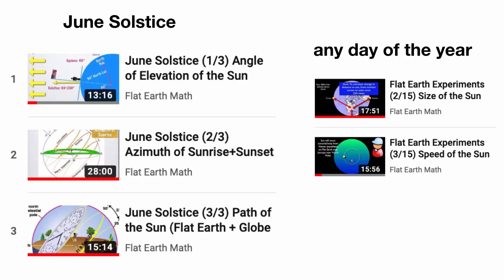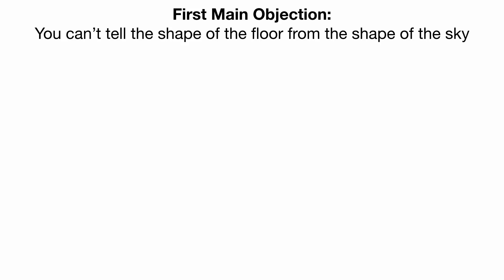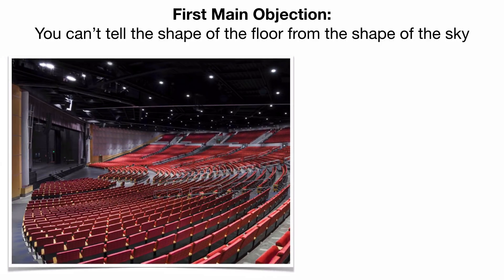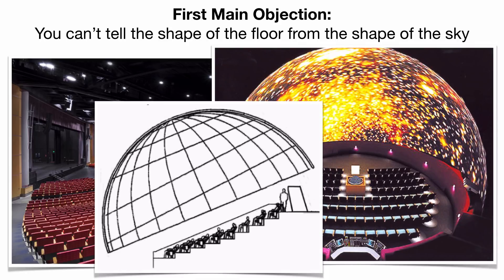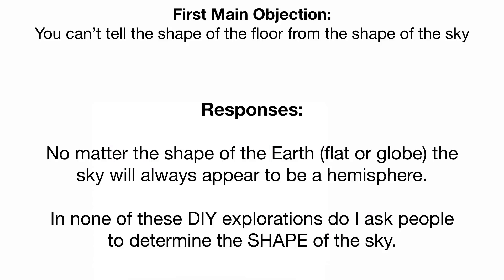The first main objection is that I'm focused on the Sun. People say you can't tell the shape of the floor from the shape of the sky — for example, an auditorium has a sloping floor and a flat roof, a planetarium has a flat floor and a domed roof. But that's actually a red herring: no matter the shape of the earth, the sky will always appear to be a hemisphere.